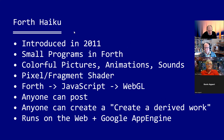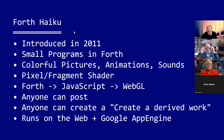Forth Haiku is the idea of taking small programs written in Forth and using them to generate colorful pictures, animations, and later sound. Really what it is is a pixel or fragment shader represented in a chunk of Forth. The plumbing that makes it run on the web is a converter written in JavaScript that converts from Forth to JavaScript, and then from that to a WebGL shader, which is a little bit like a C program, done this way to take advantage of running on the GPU.